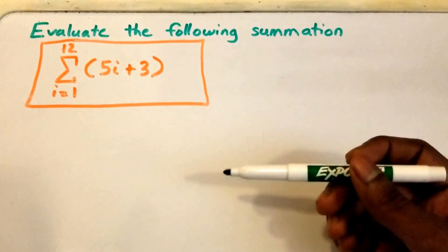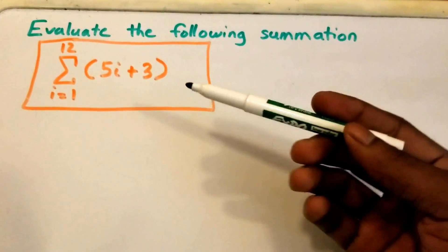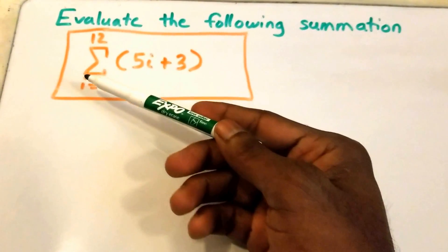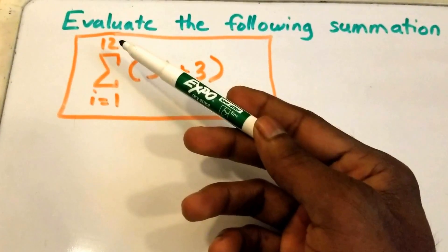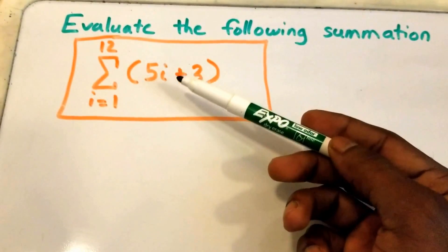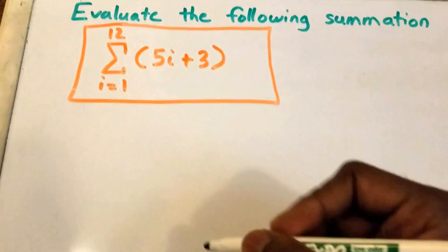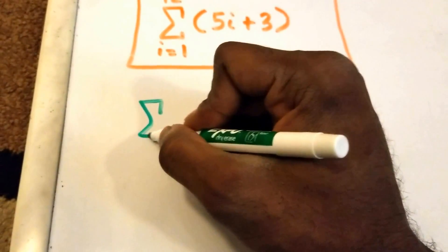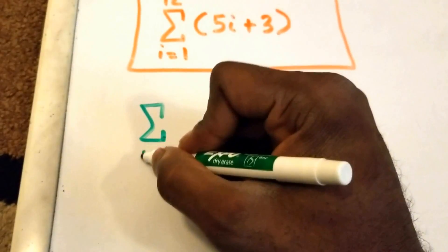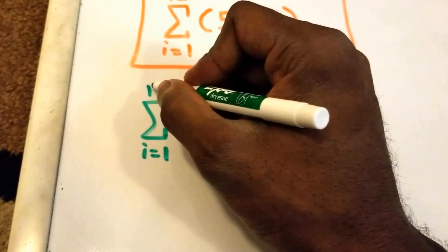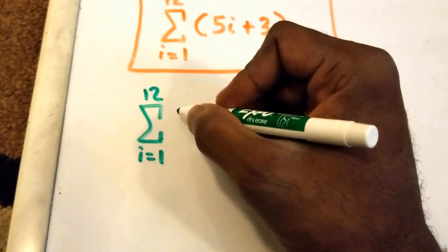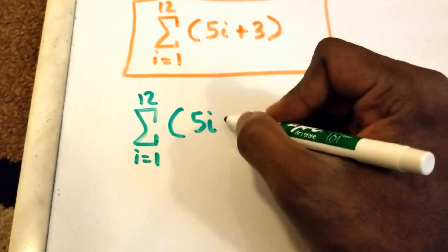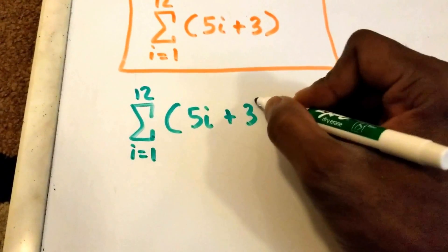Hey guys, welcome to this video on summations. Here we want to evaluate the following summation, which runs from i equals 1 to 12 of 5 times i plus 3. So let's go ahead and get started. The first thing I'm going to do is rewrite our summation: the summation from i equals 1 to 12 of 5 times i plus 3.